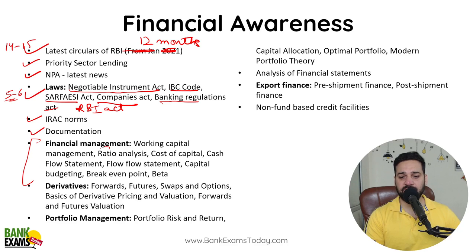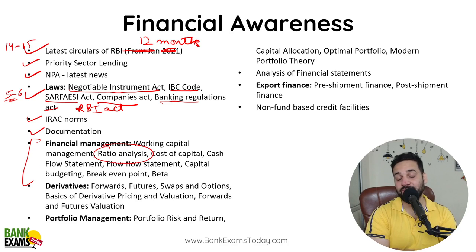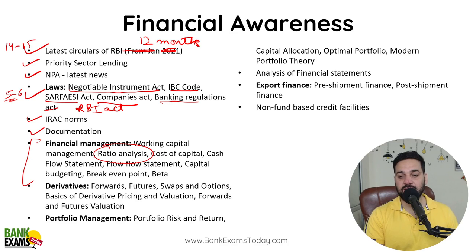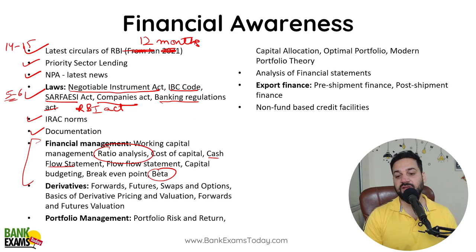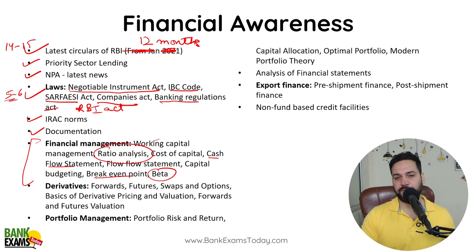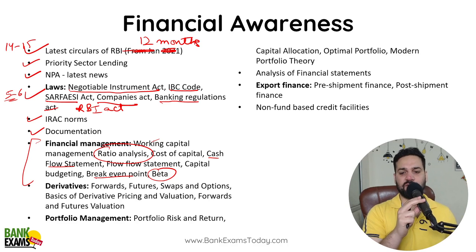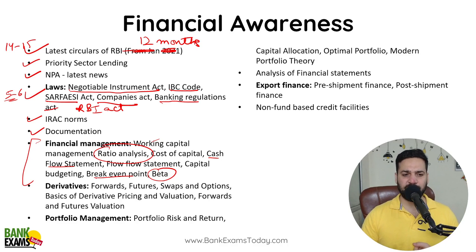In financial management, the Ratio Analysis chapter is the most important — if questions come, they come from ratio analysis. Beta is also a very important topic. Cash Flow Statement is very very important. Working Capital Management, Break Even Point — these topics are very important. Fund Flow gives fewer questions. Capital Budgeting and Cost of Capital sometimes give theory questions; numericals occasionally appear but involve easy calculations. Questions mostly come from Ratio Analysis and Beta.